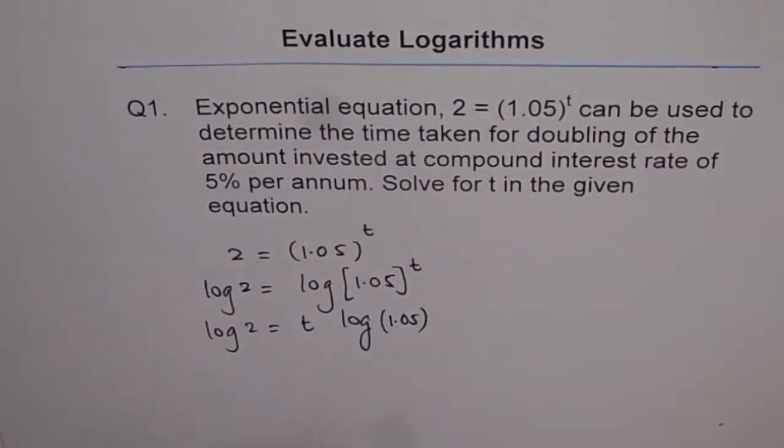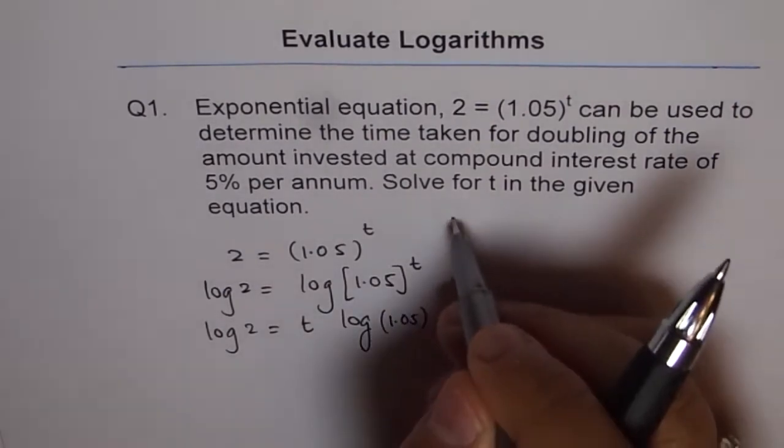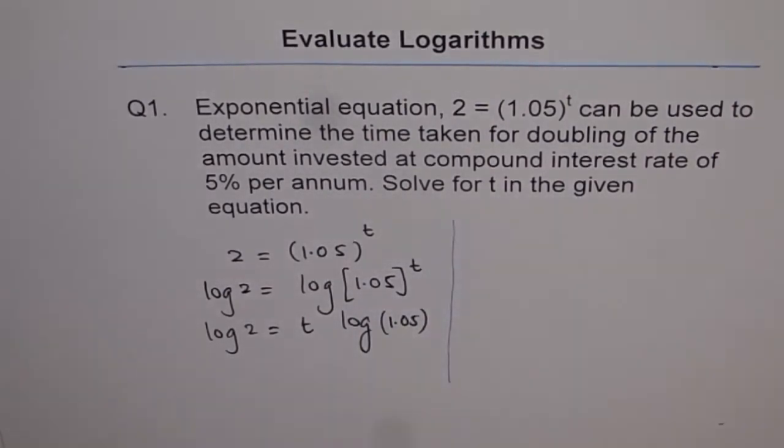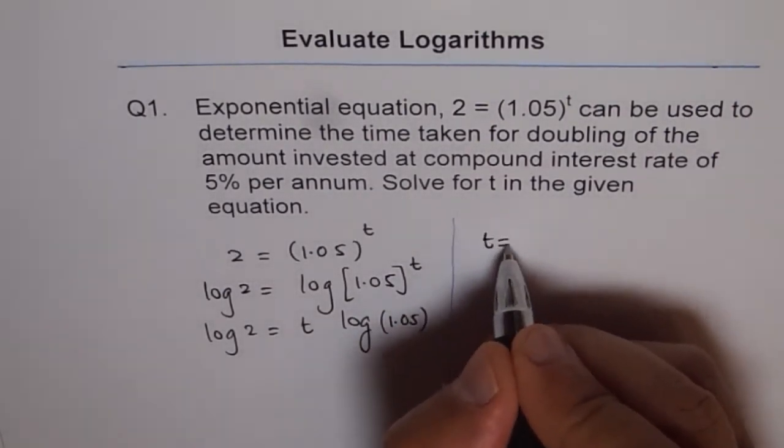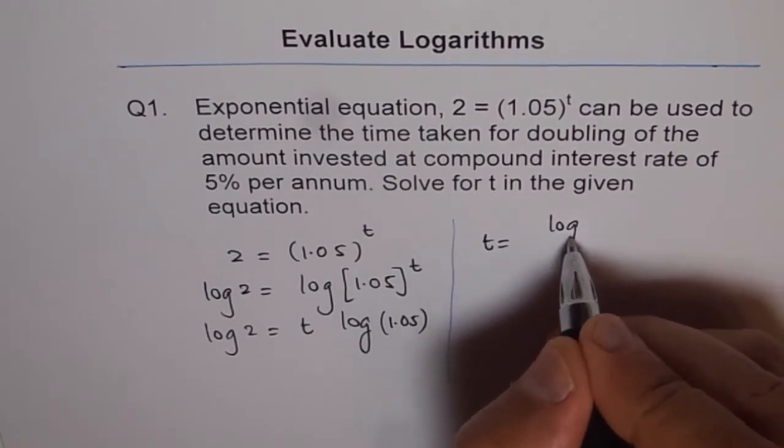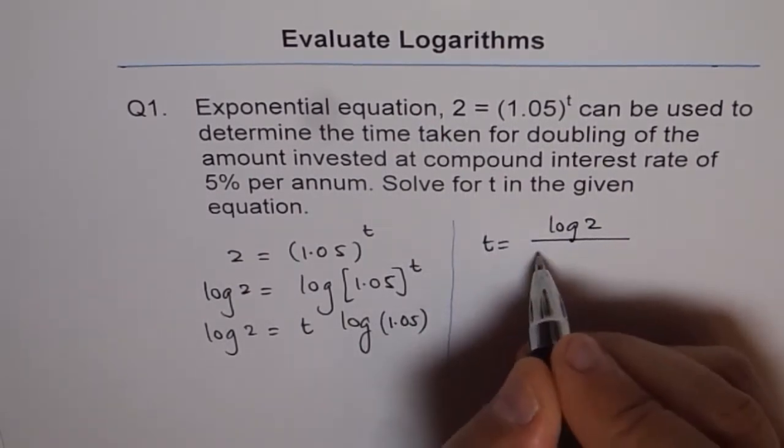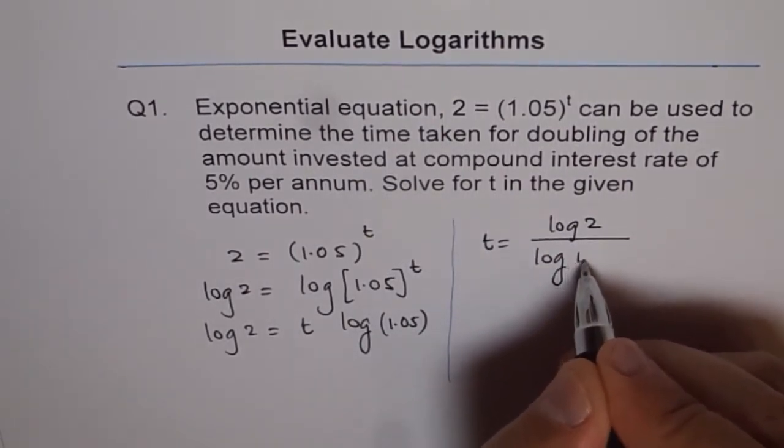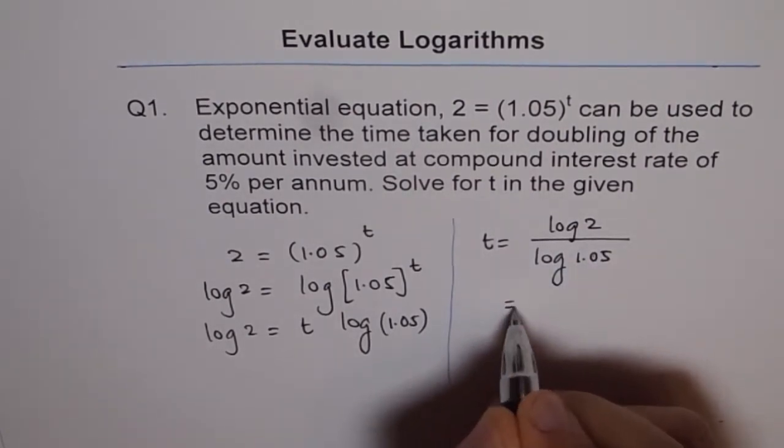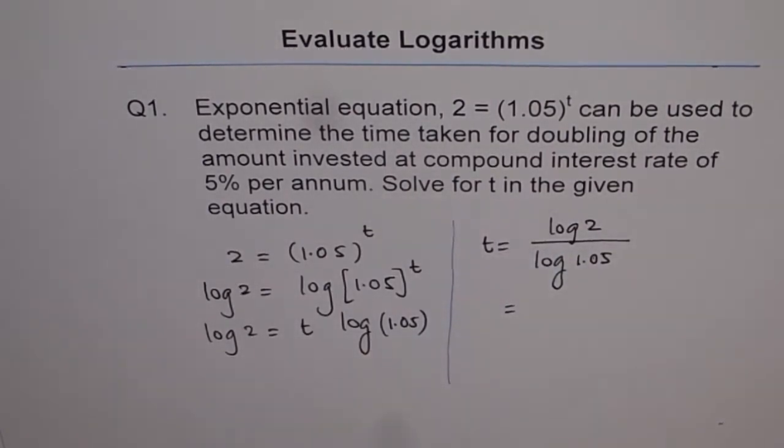From here we can write down what t is, and then use calculator to calculate. So we can say t = log 2 ÷ log 1.05, and then we use the calculator to find the answer.